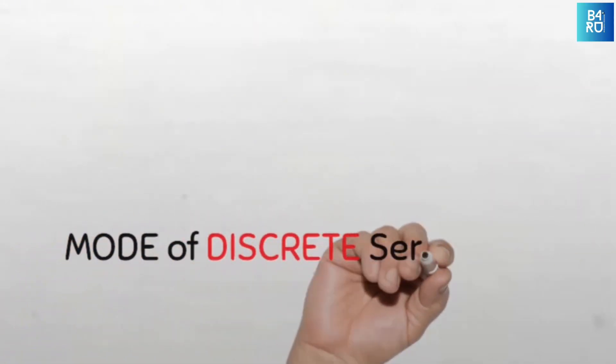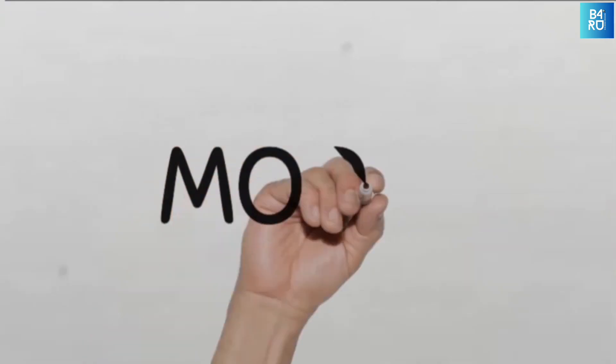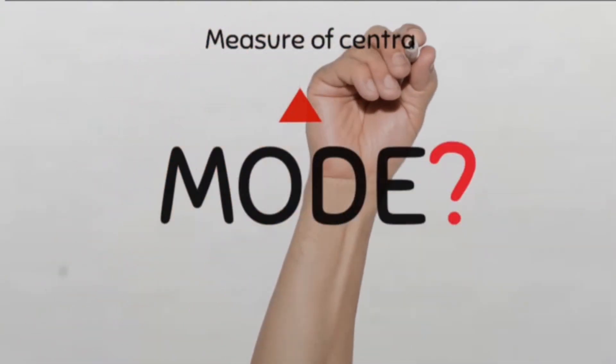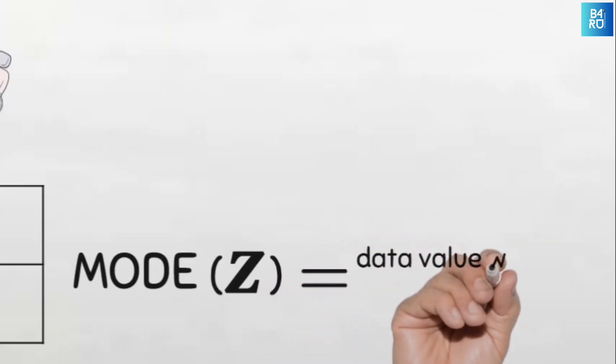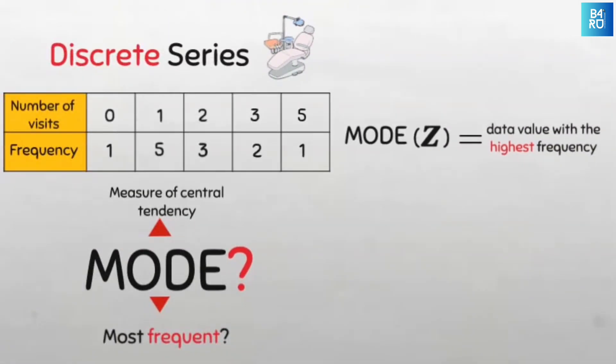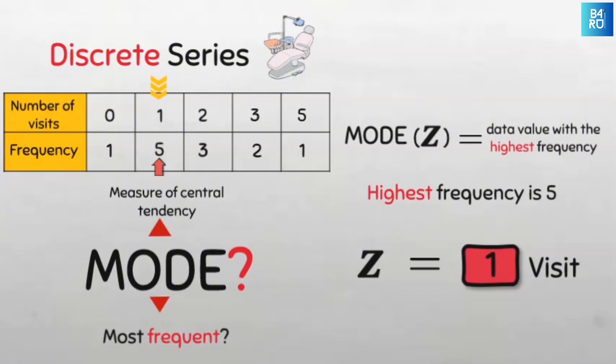The mode of discrete series data. So how do we find the mode of this data? Recall that the mode is a measure of central tendency that indicates the most frequent value of the data set. So our task here is to find the one with the highest frequency. When we look under the frequencies, we see that the highest frequency is 3, and the value with the highest frequency is 1. So our mode number of visits is 1. Easy peasy.